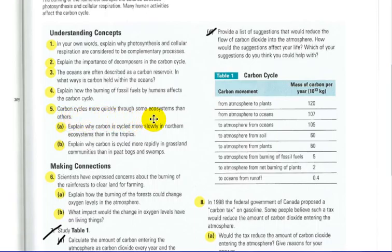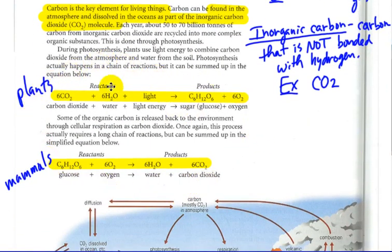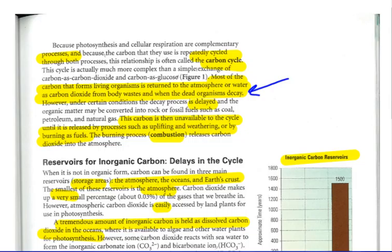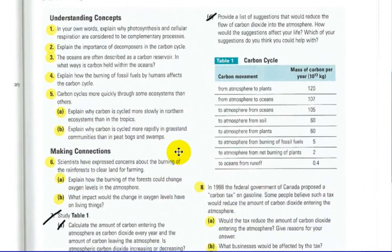Okay, you should be able to know that answer by not even looking back. Five, carbon cycles more quickly through some ecosystems than others. Explain why carbon is cycled more slowly in northern ecosystems than in the tropics. So, you can kind of think about, in order to cycle carbon, we have to have both of these happening. So, what is different about the northern hemisphere than a tropical area? And b, explain why carbon is cycled more rapidly in a grassland area as opposed to a swamp, which I just talked about.